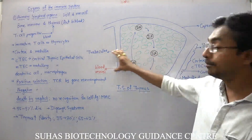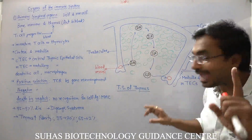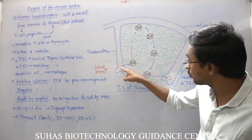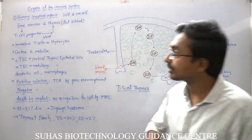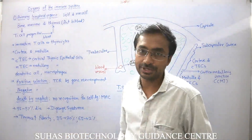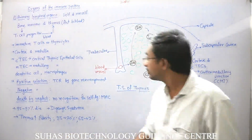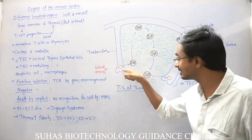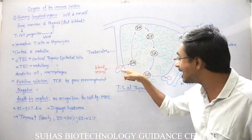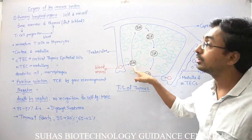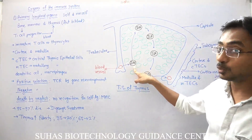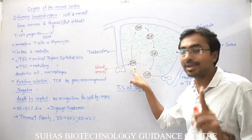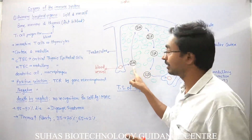Through this blood supply the T-cell progenitor is going to come out through these blood vessels. You can see this is the blood vessel, and from that the T-cell progenitor will come out. Initially it is immature, and this immature T-cell progenitor is called double negative.